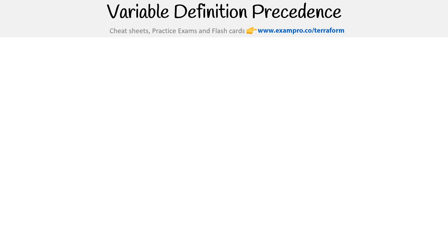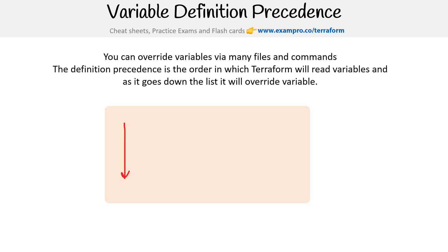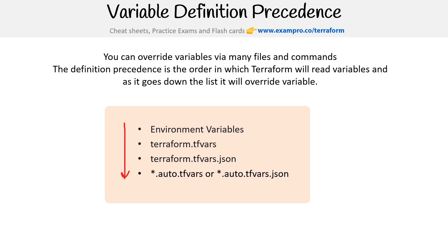There is a precedence to how these get loaded — certain variable inputs will override others. As we go down the list, each one overrides the previous. At the top are environment variables. A terraform.tfvars file overrides those. The JSON tfvars overrides that. Auto files override the default tfvars. And finally, -var and -var-file flags override everything else.